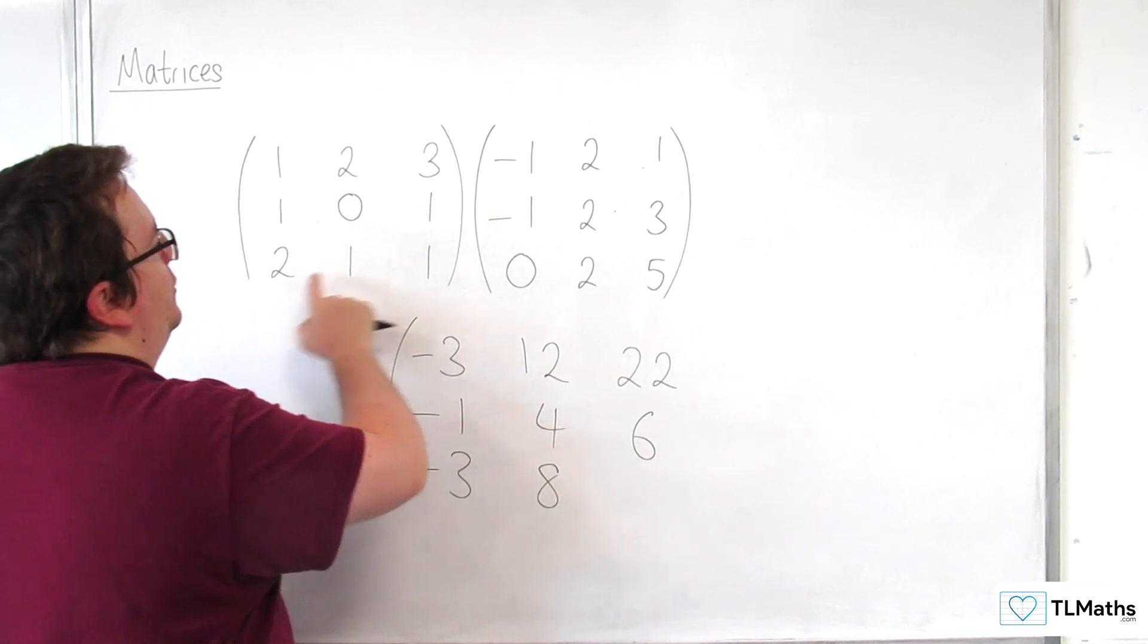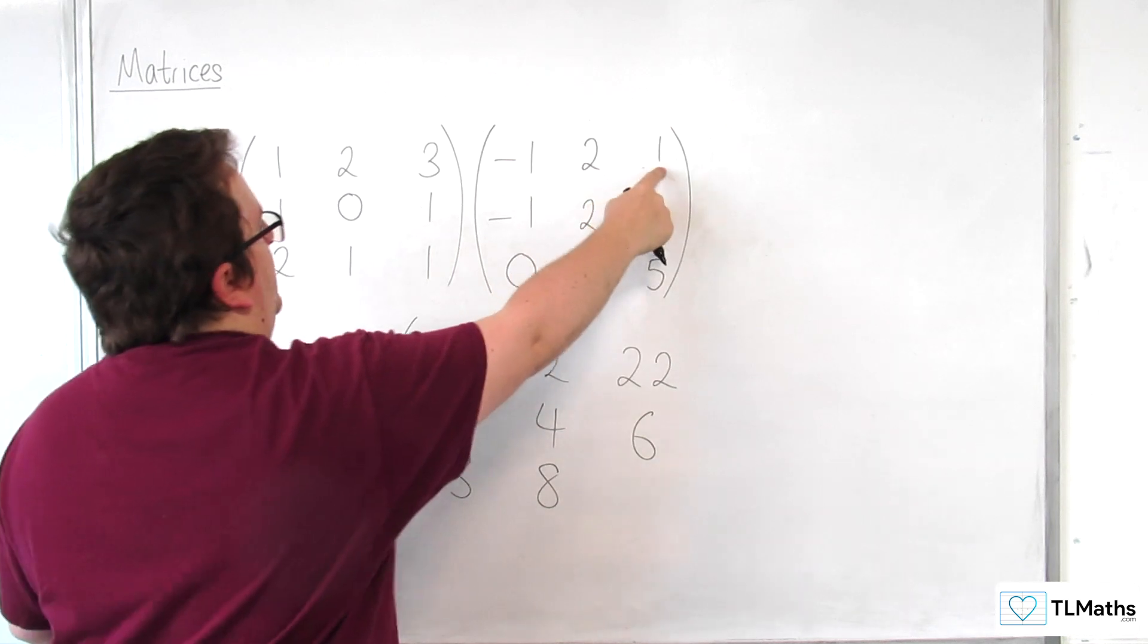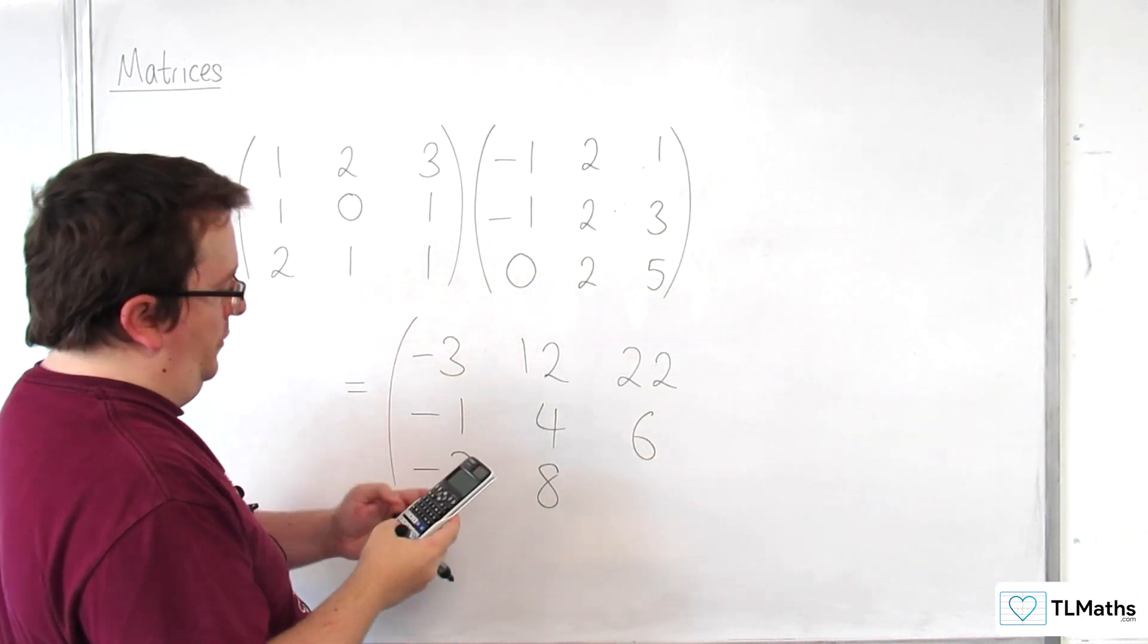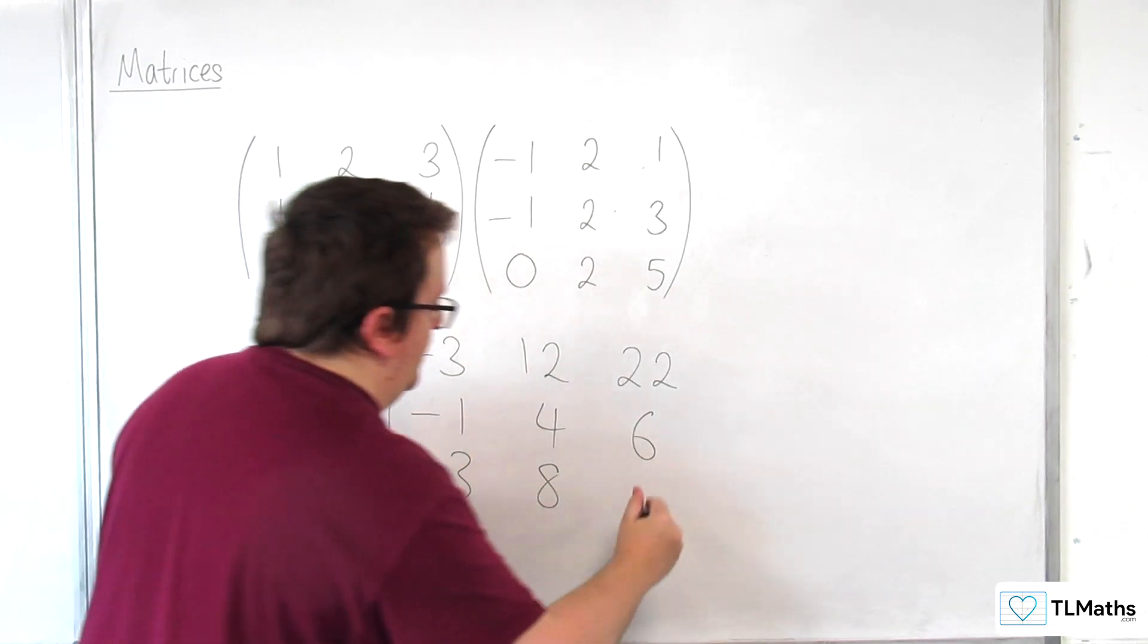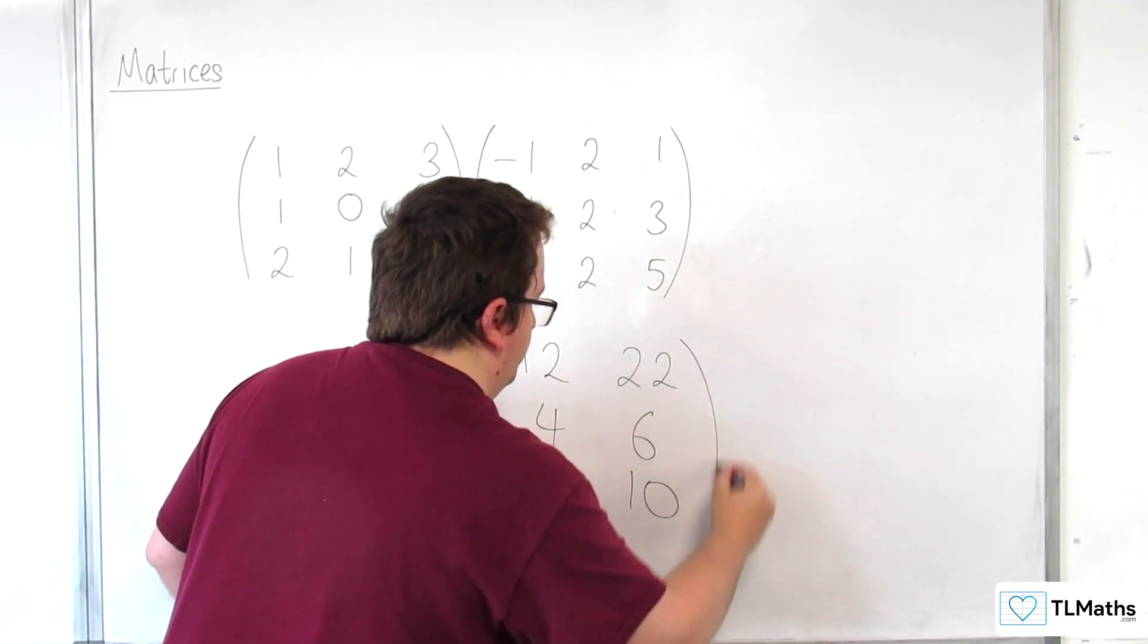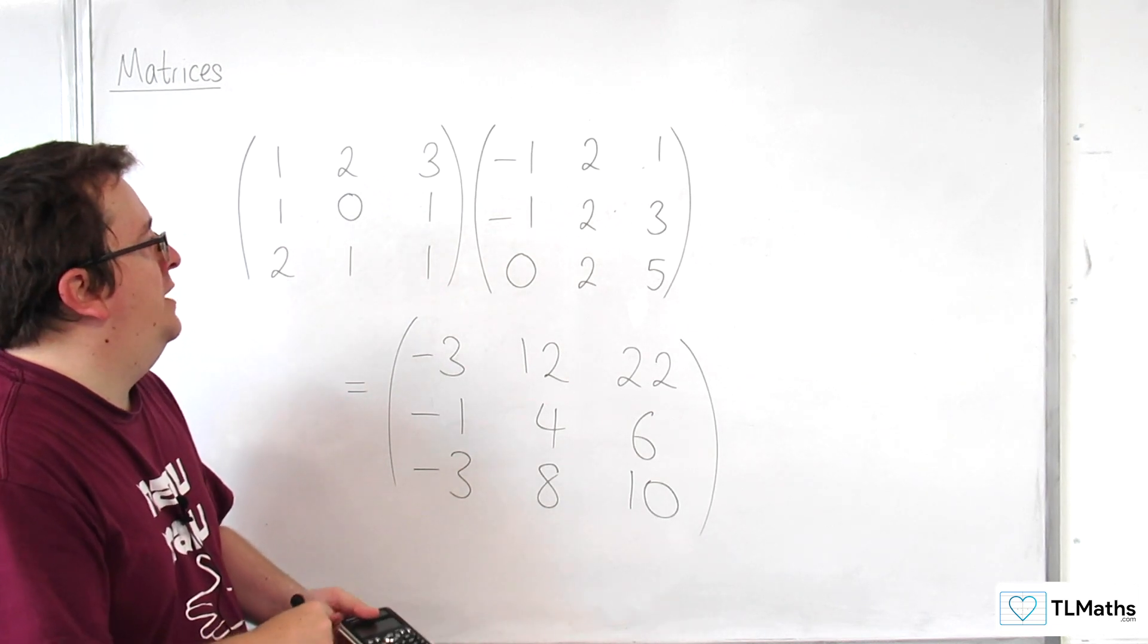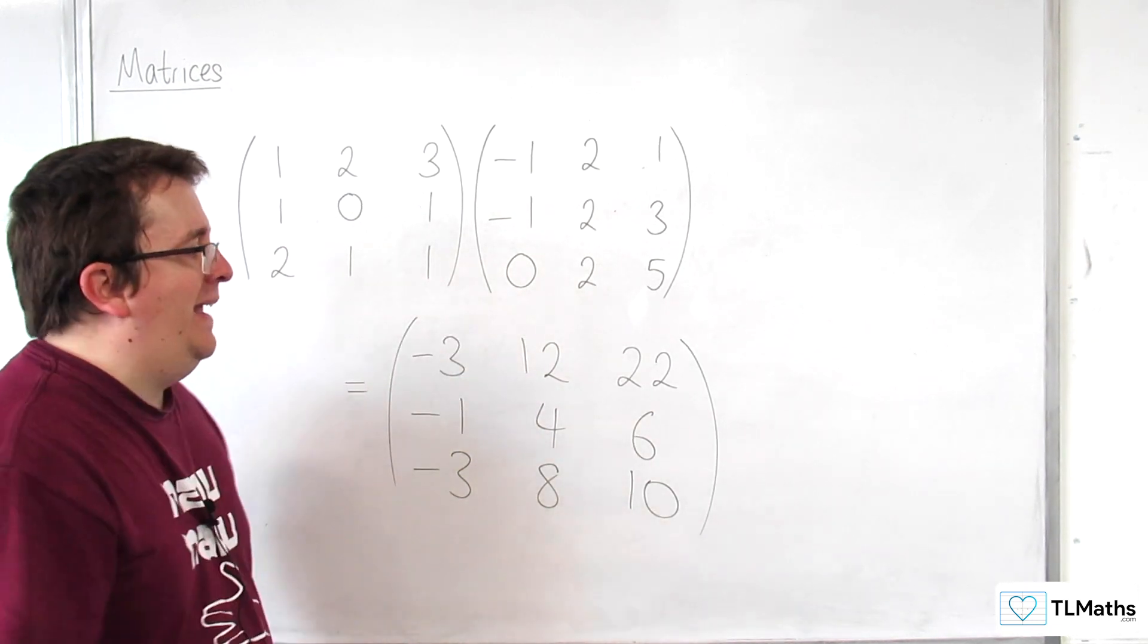And then, we've got 2, 1, 1, times the 1, 3, 5. So, 2 times 1 is 2, plus 1 times 3, plus 1 times 5, so 10. Okay. And so, here is the product of these two matrices in that order.